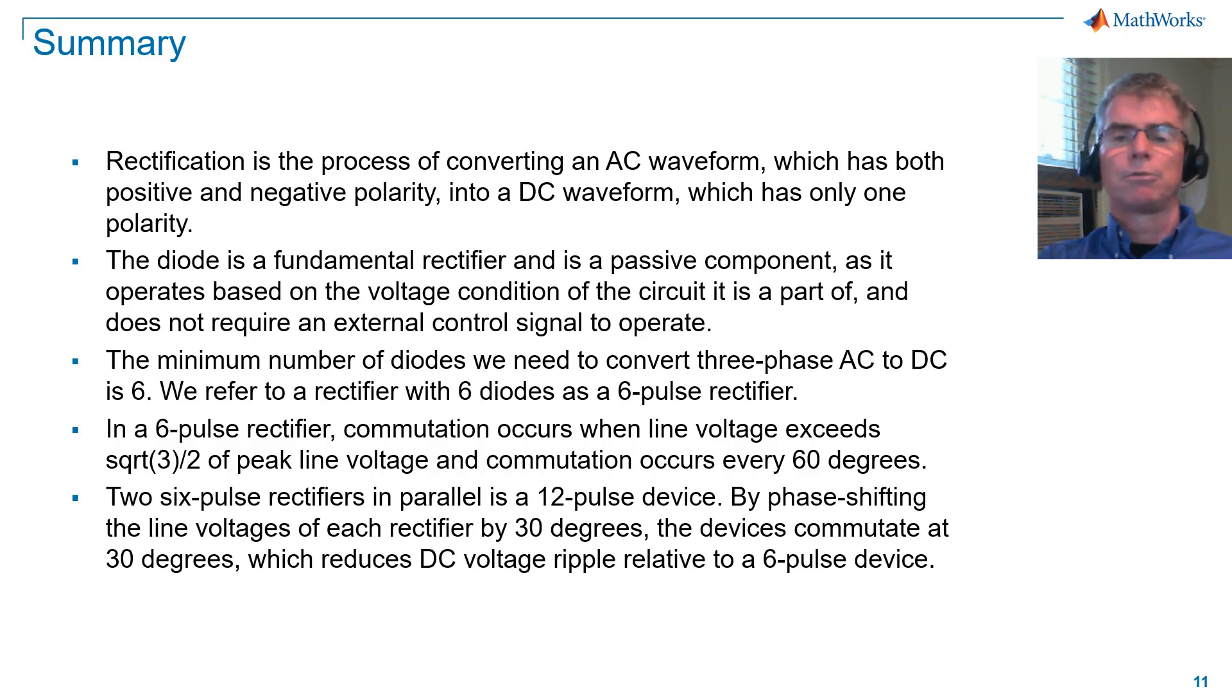Two 6-pulse rectifiers in parallel is a 12-pulse device. By phase shifting the line voltages of each rectifier by 30 degrees, the devices commutate at 30 degrees, which reduces DC voltage ripple relative to a 6-pulse device. Three-phase rectifiers introduce harmonics onto the AC supply.